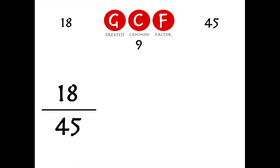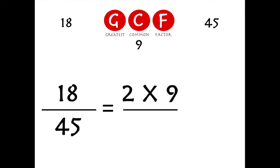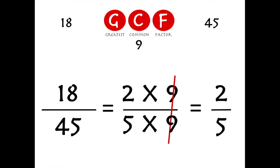If we have one of those big fractions again, we can simplify it. 18 is just 2 times 9, and 45 is 5 times 9. Cross out the 9s and voilà — 18 over 45 simplifies to 2/5.